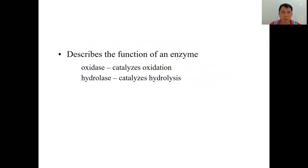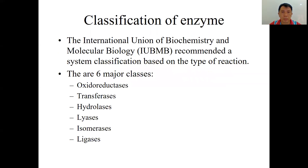From the name of the enzymes, we can tell what the function of the enzyme is — for example, hydrolysis. According to the IUB, or the current name IUBMB, International Union of Biochemistry and Molecular Biology, a system of classification based on the type of reactions is recommended. There are six major classes: oxidoreductases, transferases, hydrolases, lyases, isomerases, and ligases.